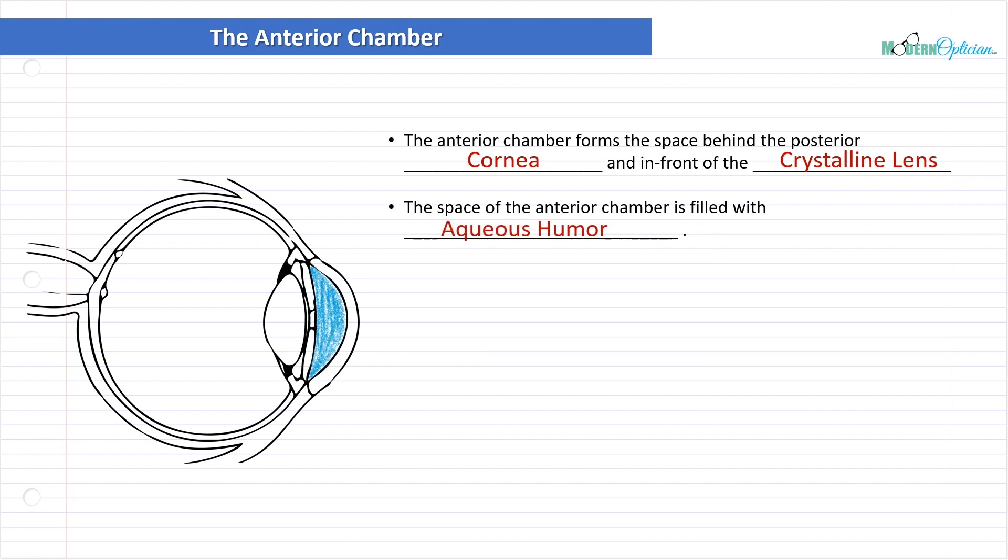The space of the anterior chamber is filled with aqueous humor. Very important. The aqueous humor pathway is a huge part of keeping intraocular pressure, and things like glaucoma are a result of when things go wrong. Aqueous humor is very important.